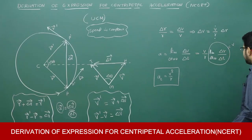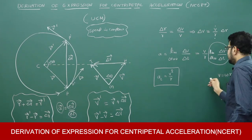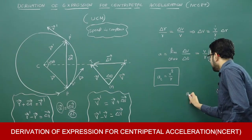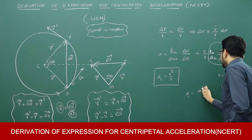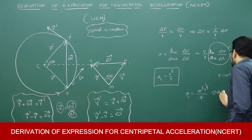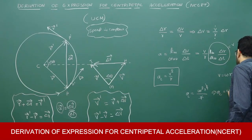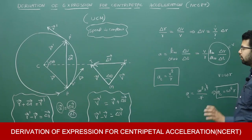In a previous session, I explained the relation between v and r: v = ωr. Substituting this: centripetal acceleration = v² / r = (ω²r²) / r = ω²r. One factor of r cancels, so the expression for centripetal acceleration is also equal to ω²r. Hope you have understood it.